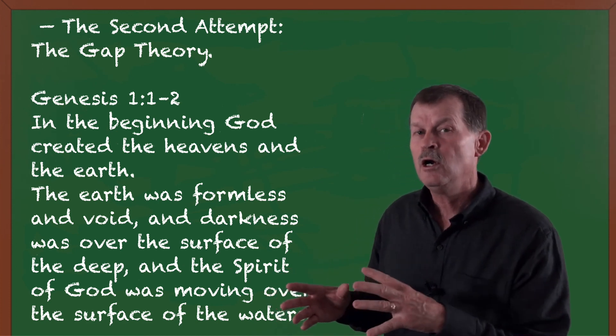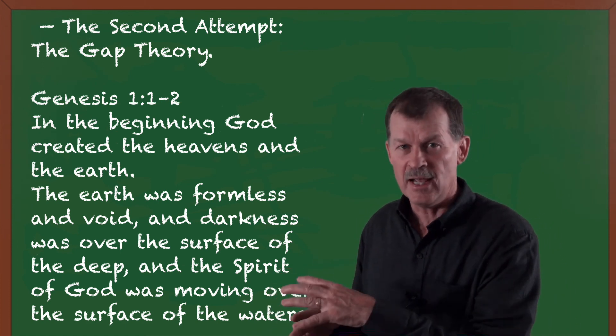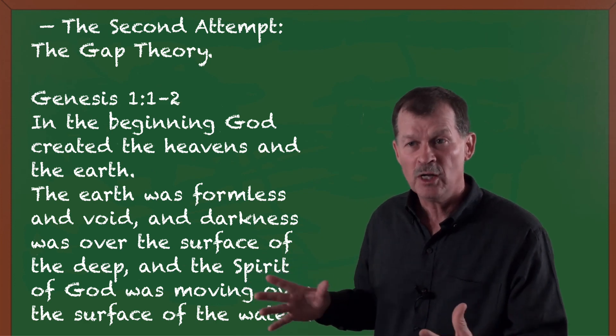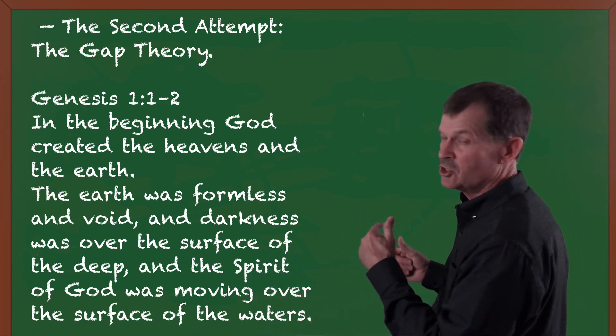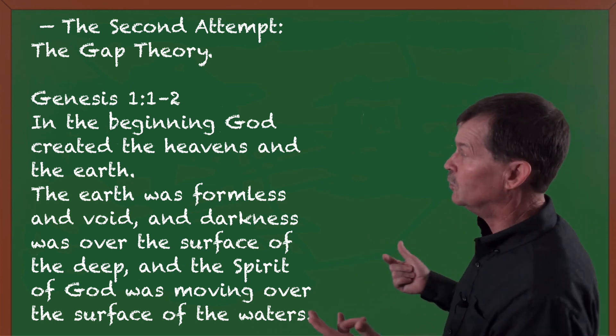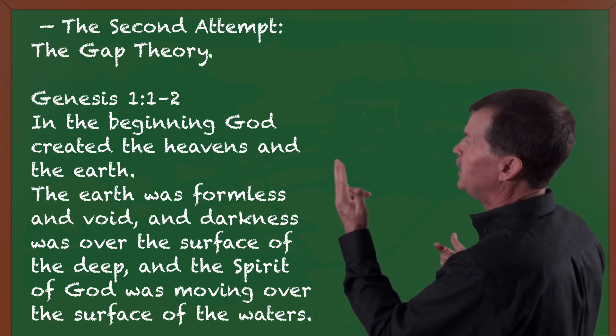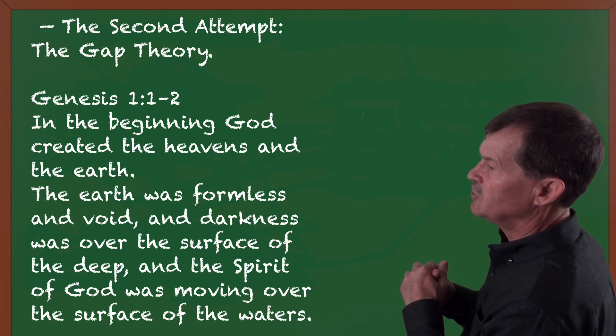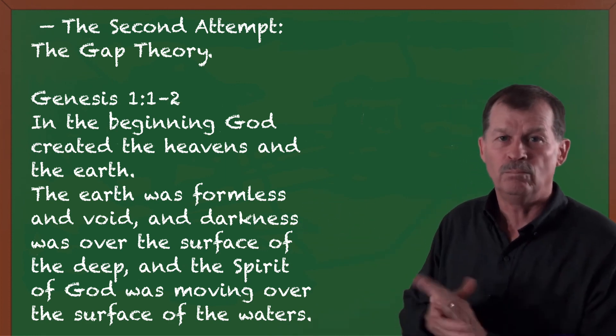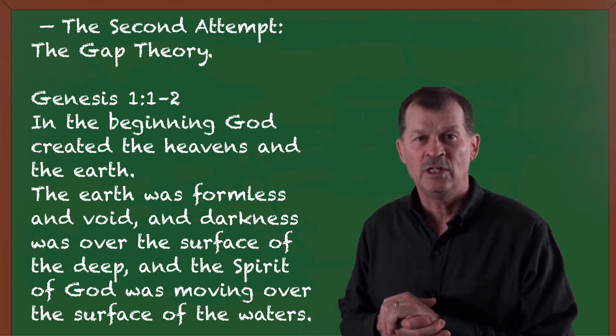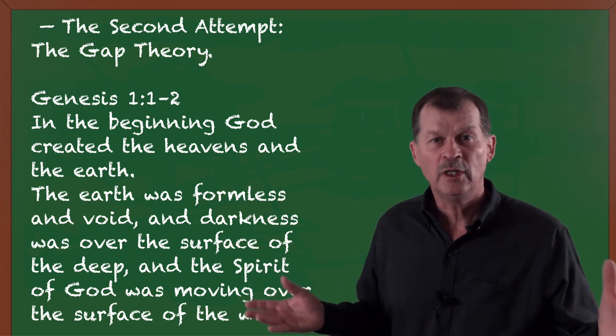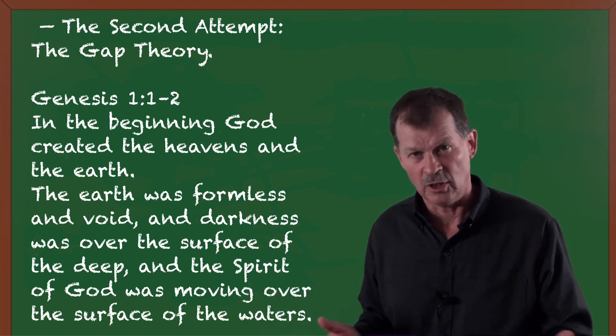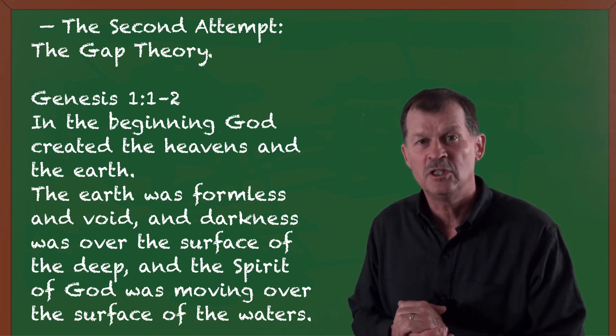Where can we put them in the creation process? The gap theory starts in Genesis chapter 1, verses 1 and 2, where it says, In the beginning, God created the heavens and the earth. Boom. It's done. And so in the beginning, God created everything, and everything was good. That creation is now finished.